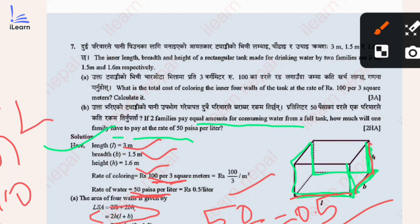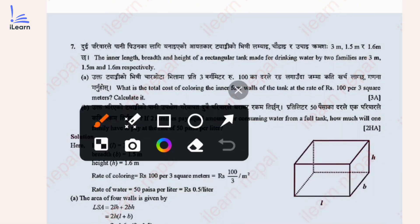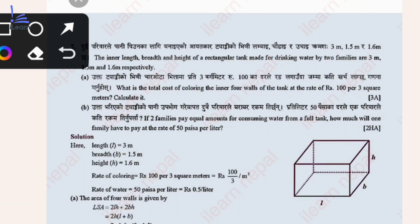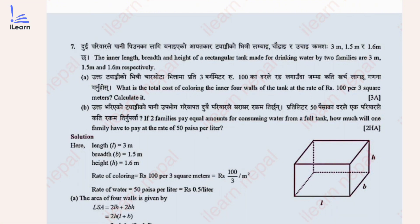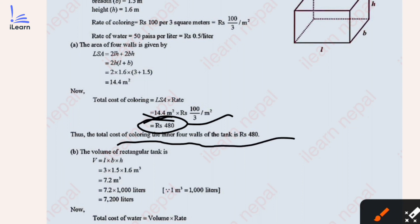The formula we studied in class 9 is: lateral surface area = 2h(l + b). Substituting the values: 2 × 1.6 × (3 + 1.5). The total colouring cost of the inner four walls of the tank is RS 480.